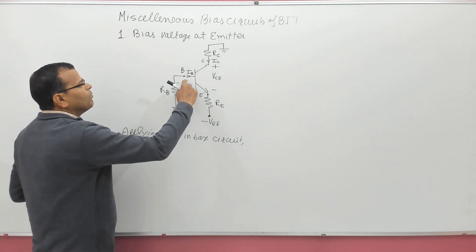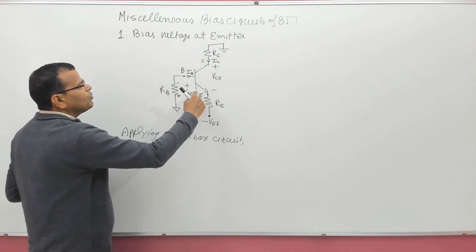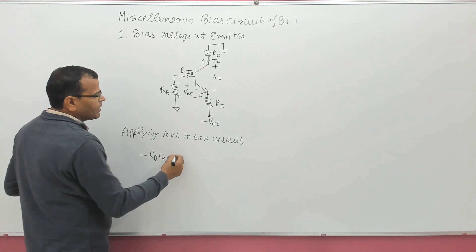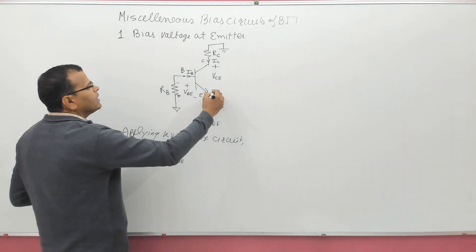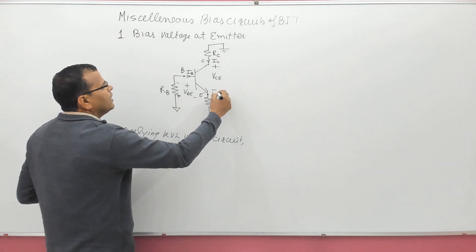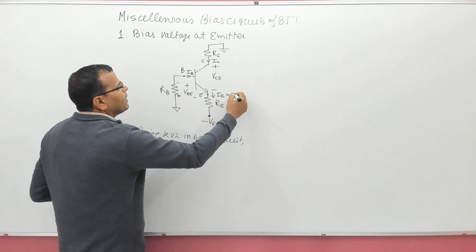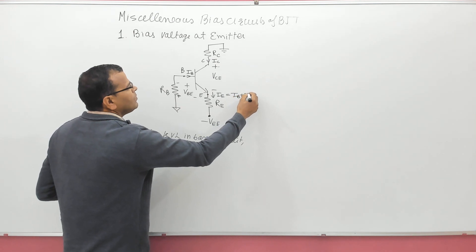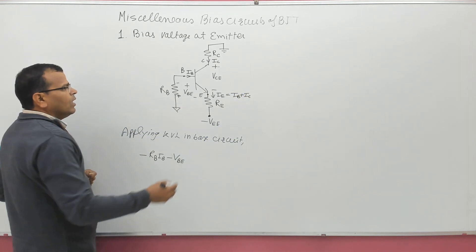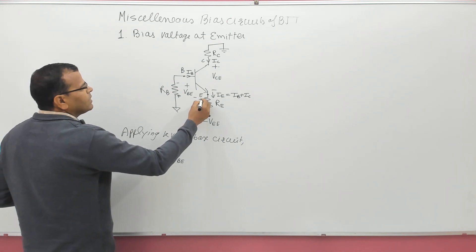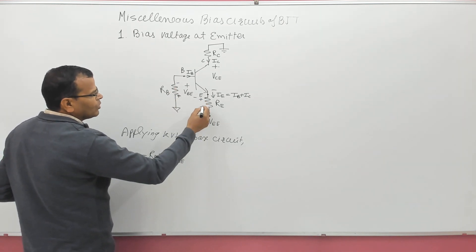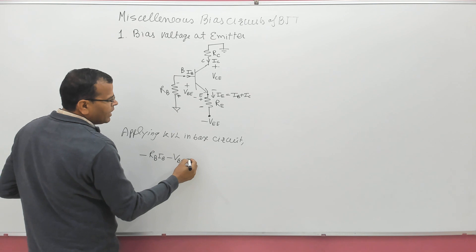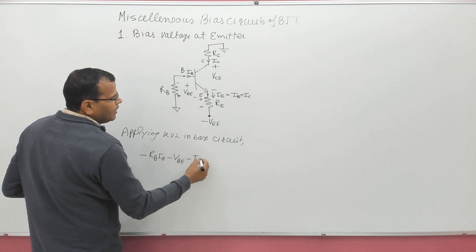Then come to this point, move from B to E — plus to minus voltage fall, so I will take this as minus VBE. Then here the current is IE, and you know IE = IB + IC. So again this will be plus. Remember, when current enters at the terminal of a resistance, that is positive, and the point at which current leaves is negative. So this is also plus to minus voltage fall: minus IE × RE.